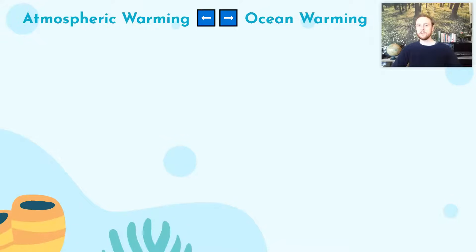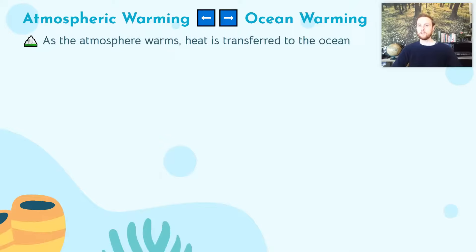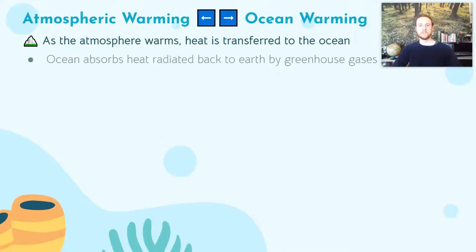The title of this slide reminds us that it's a two-way relationship. The atmosphere can warm the ocean, and the ocean can then pass some of that heat and warmth back to the atmosphere. As our planet warms and greenhouse gases in the atmosphere radiate heat back to Earth, the ocean is going to absorb a lot of that heat. As the atmosphere warms, so does the ocean.